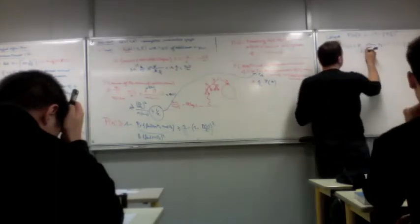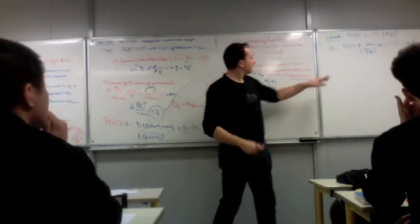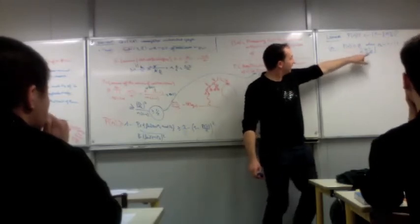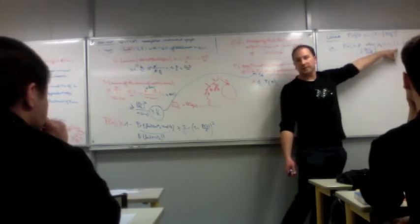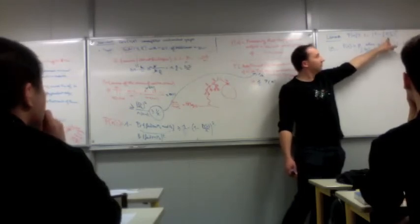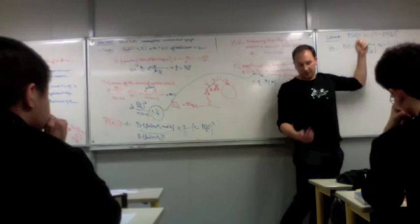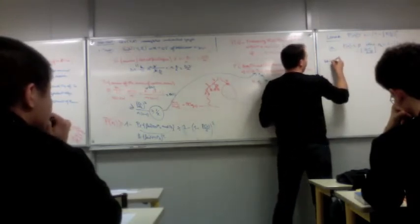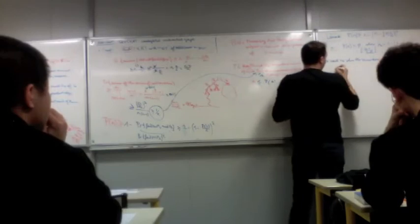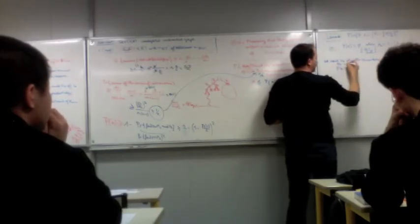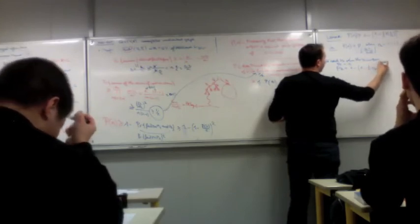By recurrence, P of n is larger than Pk, where Pk is defined as one minus one minus one half Pk minus one, squared, with k equal to log n over log square root of 2. By recurrence you can show that this holds, because it's an increasing function of P — the inequalities are preserved in the recursion. So now we need to solve the recurrence: P0 equals some constant, and Pk equals one minus one minus one half Pk minus one, squared.